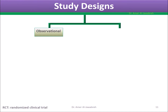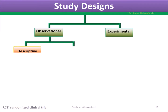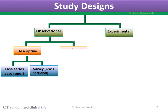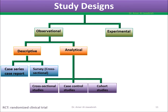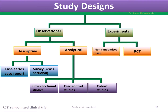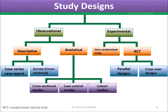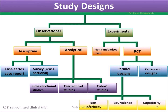Study designs are either observational or experimental. Observational studies can be descriptive, like case series, case report, or surveys. Analytical studies are either cross-sectional, case control, or cohort. Experimental studies are either non-randomized or randomized clinical trials, which can be superiority, equivalence, or non-inferiority studies.